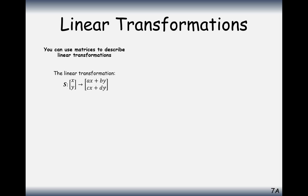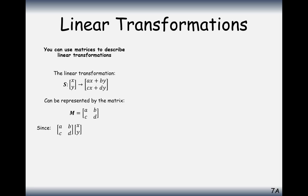A linear transformation is defined as some multiple of the x-coordinate added to some multiple of the y-coordinate. It could have a subtraction, or 0 as the x part — it's just some number times x plus some number times y. This can be represented by a matrix ABCD, where multiplying that matrix by the column vector (x, y) gives exactly this transformation.